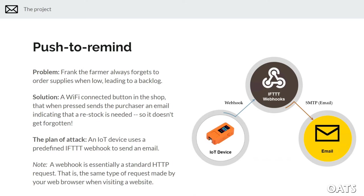In this case, what we're trying to solve is that farmer Frank always forgets to order supplies when they're low, which creates a backlog in the following days when he can't do the maintenance he needs to do in his shop. Our solution is to develop a Wi-Fi connected button — reasonable since Wi-Fi can be installed in his shop. When you push the button, it sends an email to whoever does the purchasing on the farm to indicate that a restock is needed, so it doesn't get forgotten.